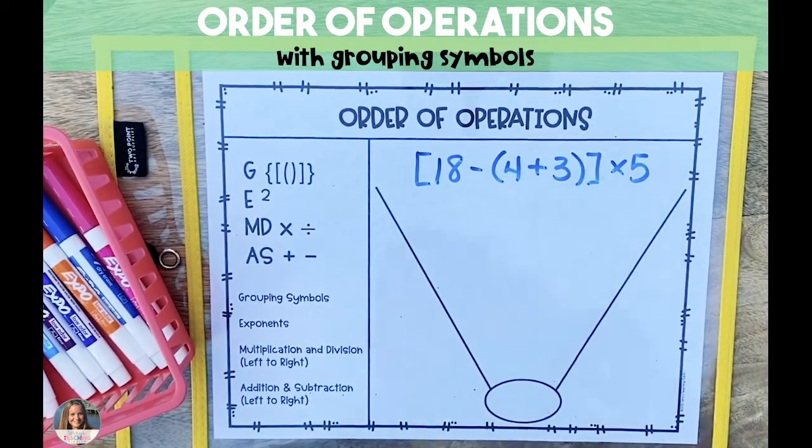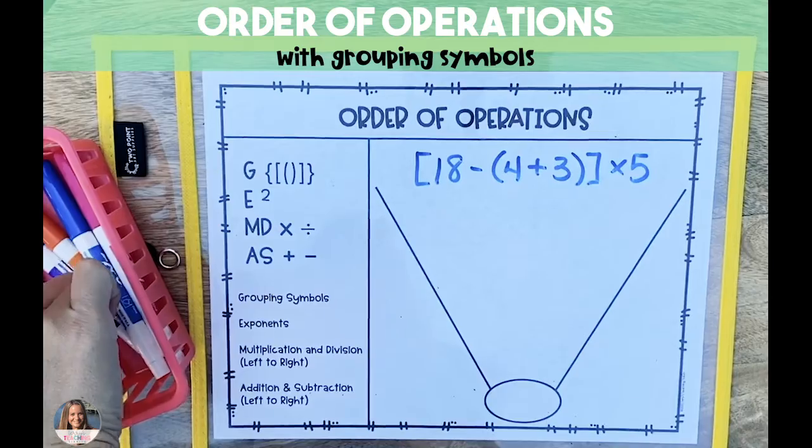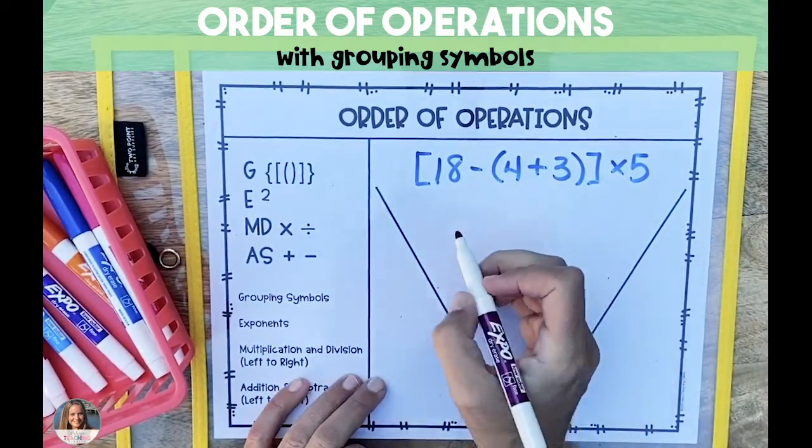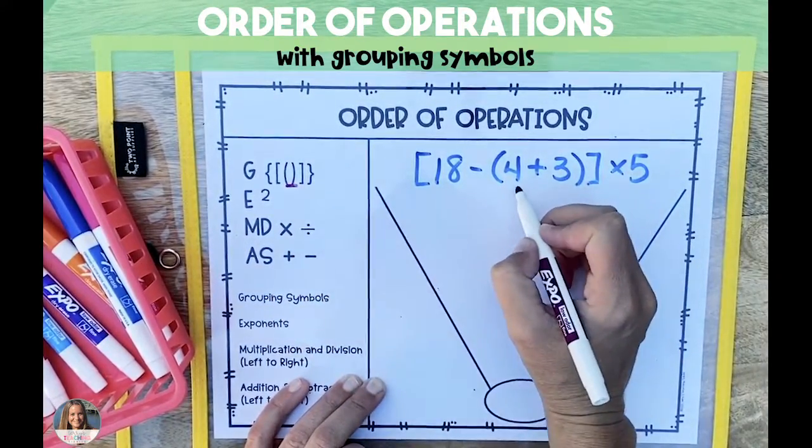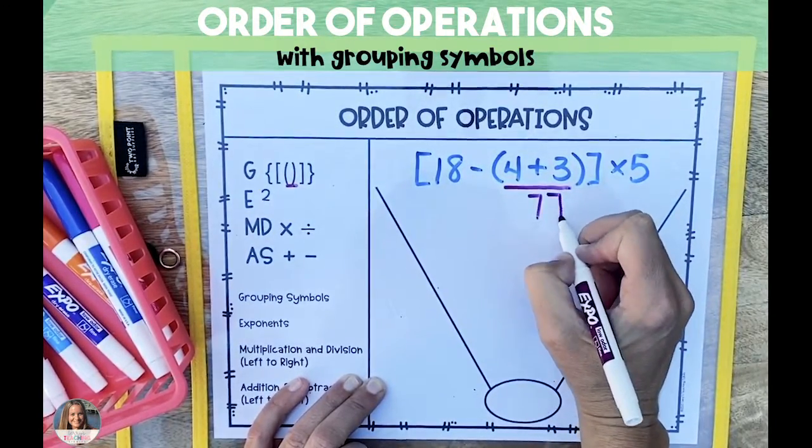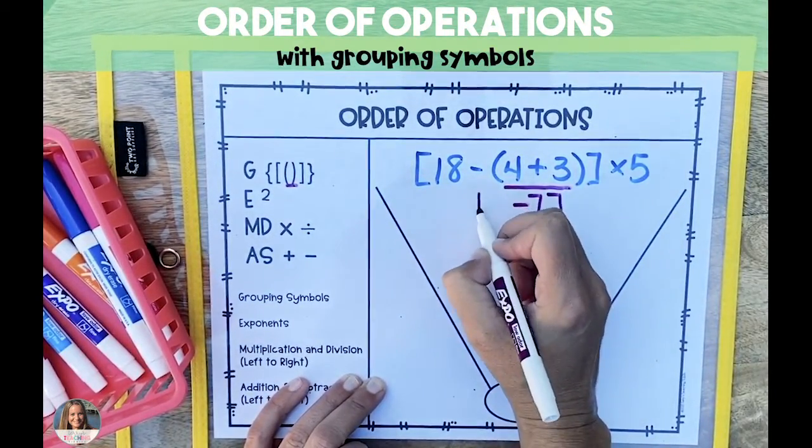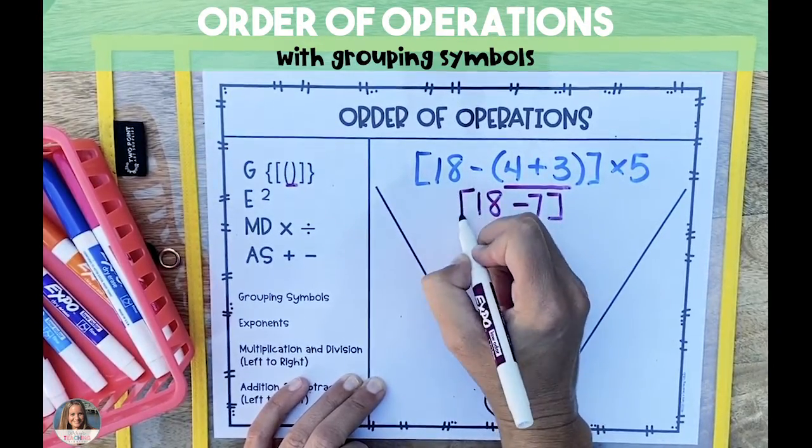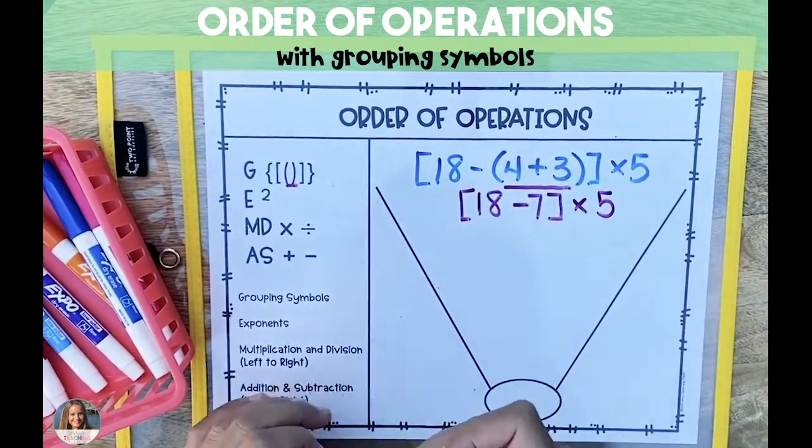The next grouping symbol we're going to use are brackets. These are placed outside of parentheses, and when we go to solve them, we actually start inside in the parentheses, and we work our way out. So the first step of this problem is going to be to solve the 4 plus 3 in parentheses, which is 7, and bring down the rest of the problem.